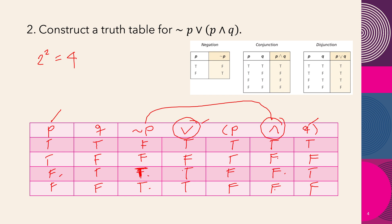The truth table of this statement gives: true, false, true, true. This is the completed truth table for example two.